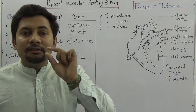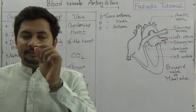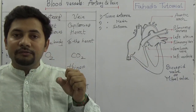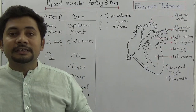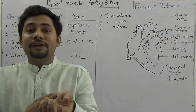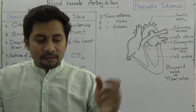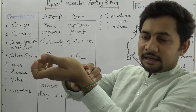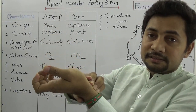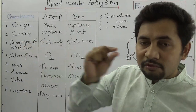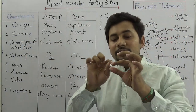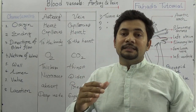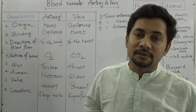Because the lumen of arteries is very narrow, as blood moves through them the artery walls contract and expand, creating a vibration that can be felt by touching. This vibration is known as a pulse. So the narrow lumen of arteries causes these contractions and expansions, which produce the pulse.